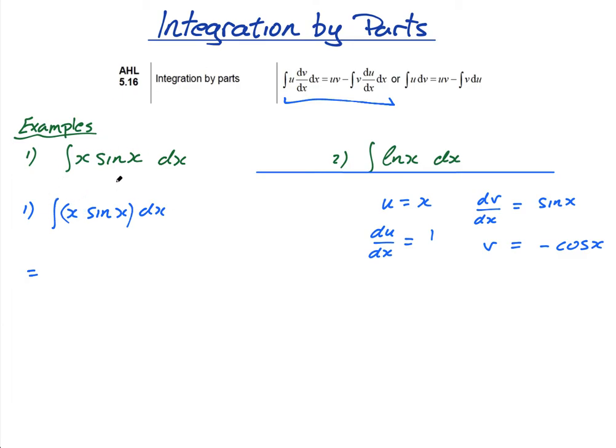Okay, so I have my u, and my du dx, and my v, and my dv dx. So, I'm first going to fill in the formula. So, it's uv, so u times v, so it's minus x cos x, that's my u times v, minus the integral of v times du dx, v times, du dx is just 1, dx.